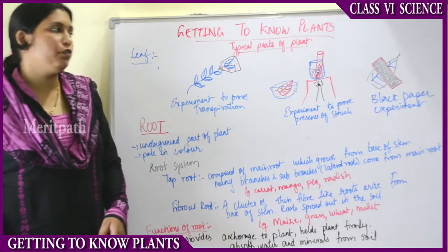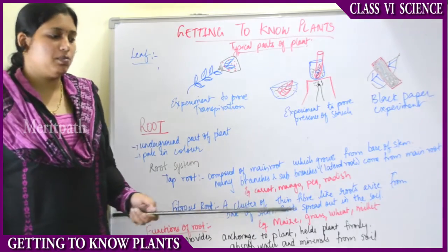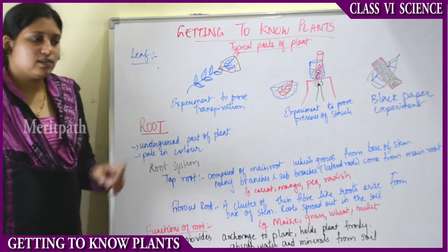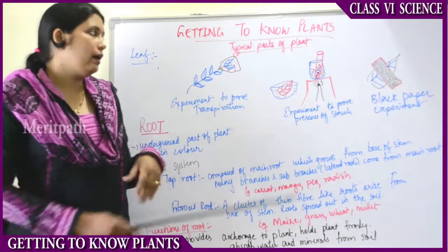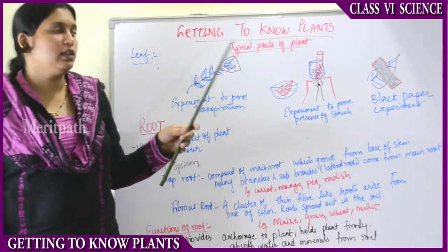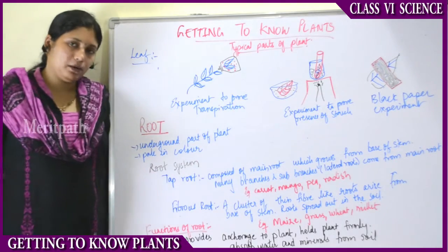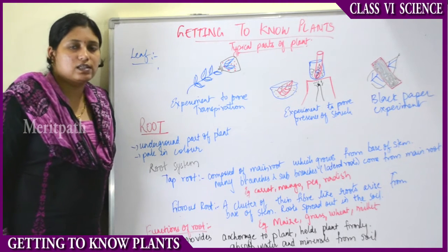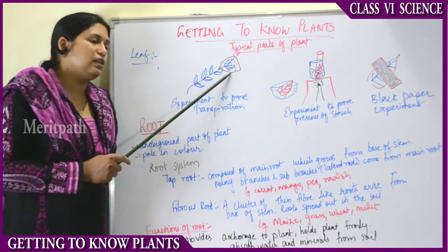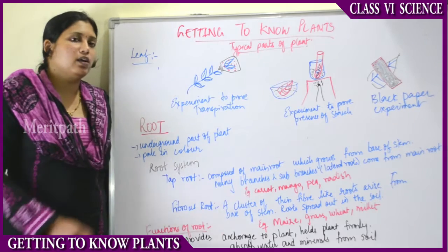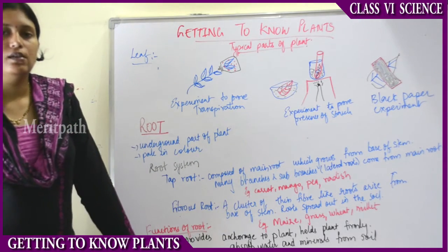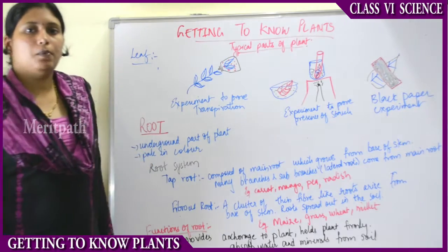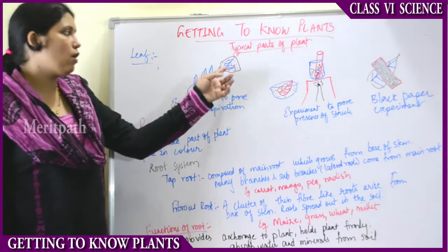To prove the functions of the leaf — transpiration and photosynthesis — take a potted plant, select a stem, and take two leaves from that stem. Tie a transparent polythene bag to those two leaves and tighten it with a string. Put it in the sunlight for a few hours and observe.